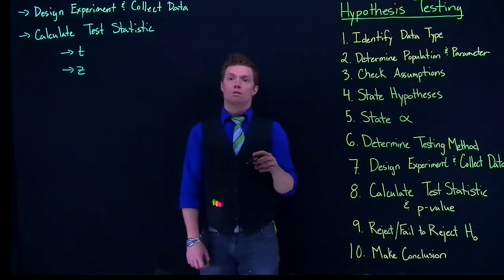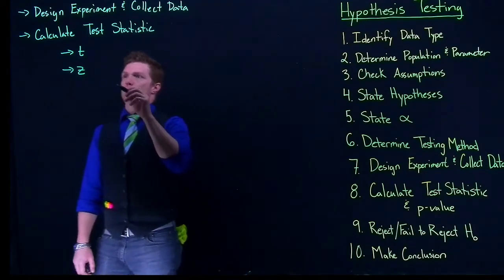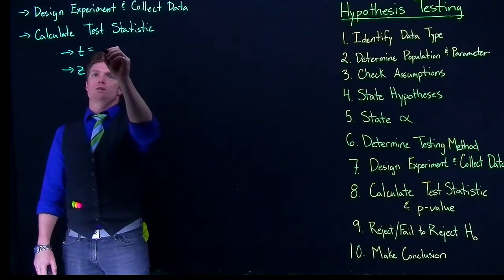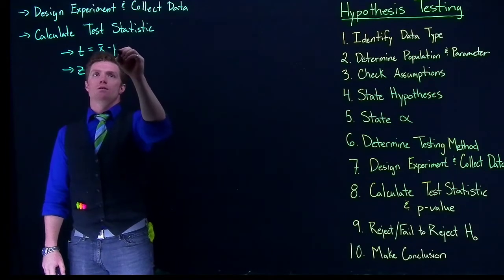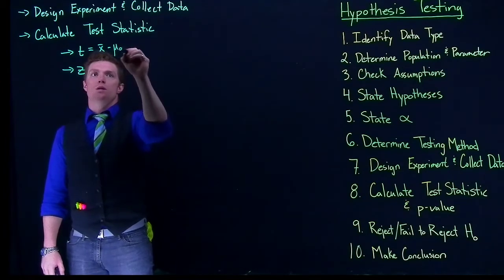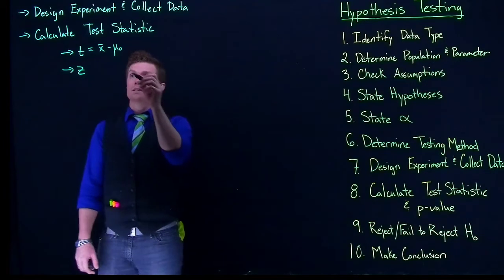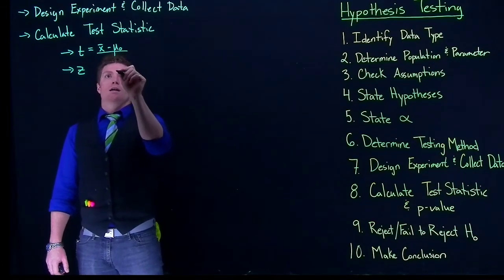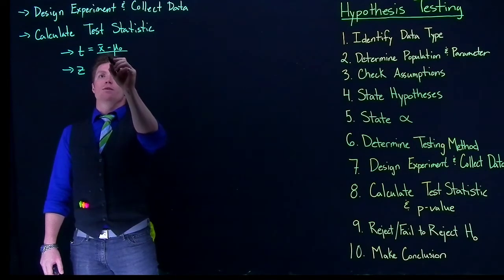Instead of using mu, we use mu naught. The t equation is going to be x-bar minus mu naught — the hypothesized mean, because we don't know what the true mean is — divided by s divided by the square root of n.